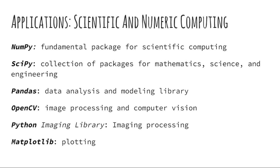Let's discuss the packages in Python helpful for scientific and numeric computing. NumPy is the fundamental package for scientific computing with Python — it is useful to create powerful n-dimensional array objects, and comes with capabilities such as linear algebra, Fourier transforms, and random number generation. SciPy is a collection of packages for mathematics, science, and engineering. Pandas is a data analysis and modeling library. OpenCV is a library used for image processing and computer vision, especially when computational efficiency is important. The Python Imaging Library adds image processing capabilities to your Python interpreter, supporting many file formats, but is far less powerful than OpenCV.